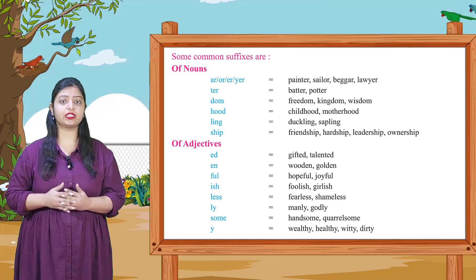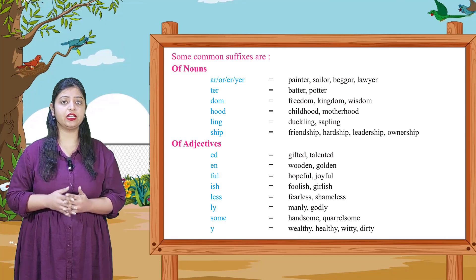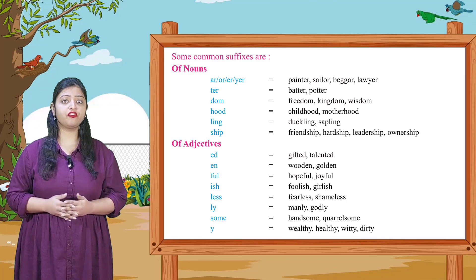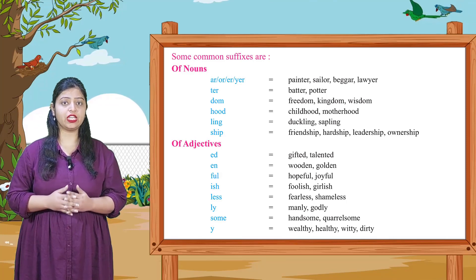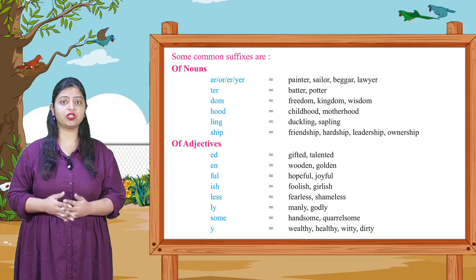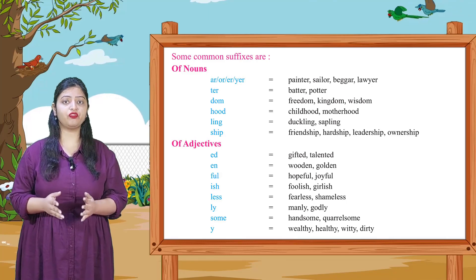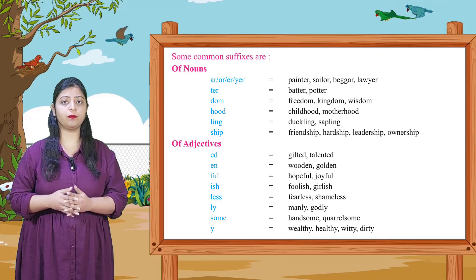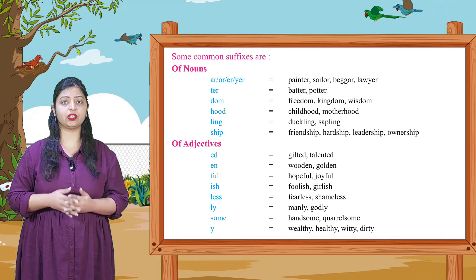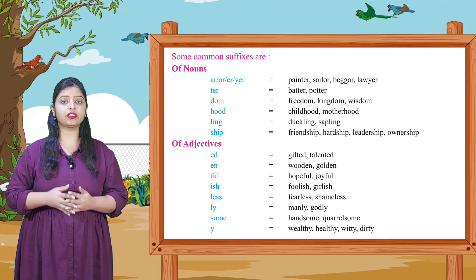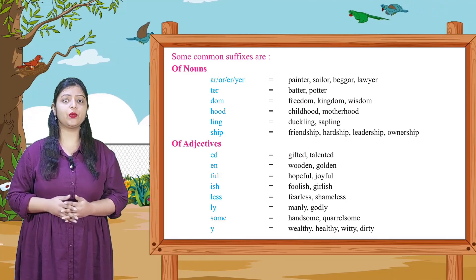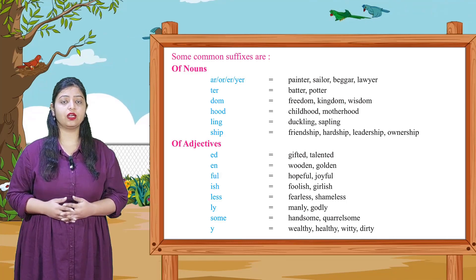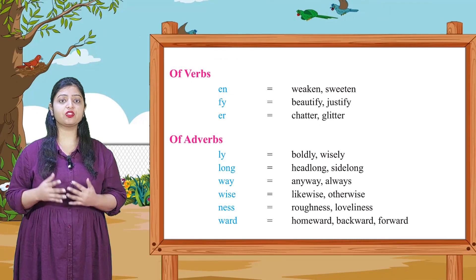Suffixes of adjectives: -ed: gifted, talented. -en: wooden, golden. -ful: hopeful, joyful. -ish: foolish, girlish. -less: fearless, shameless. -ly: manly, godly. -some: handsome, quarrelsome. -y: wealthy, healthy, witty, dirty.